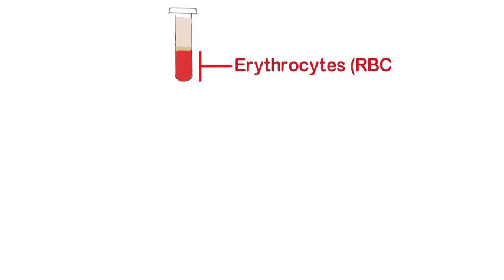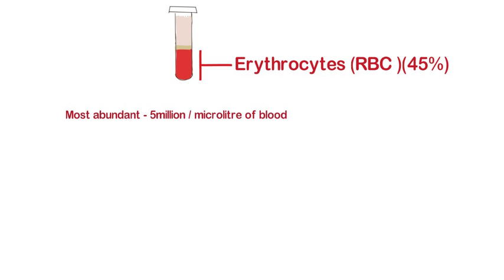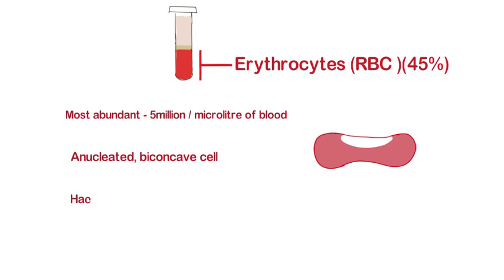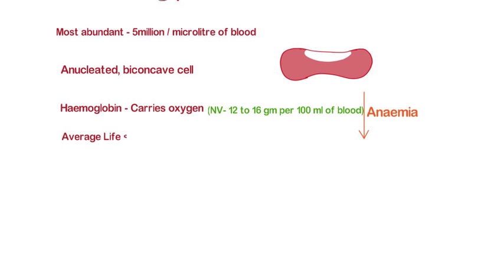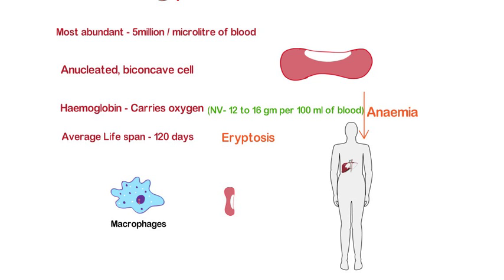Red blood cells, or erythrocytes, are the most abundant cells found in blood — about 5 million per microlitre. These are anucleated, biconcave disc-shaped cells. RBCs contain the important protein hemoglobin, responsible for carrying oxygen by forming oxyhemoglobin. Normal hemoglobin value is 12 to 16 grams per 100 ml; below this, the condition is called anemia. RBCs are short-lived with an average lifespan of 120 days. Old and defective RBCs undergo eryptosis, or programmed death, with help from macrophages and phagocytosis in the spleen, liver, and lymph nodes.